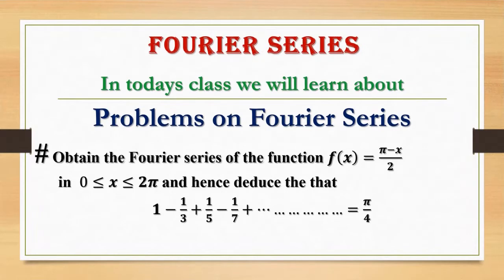In today's class, we will learn about problems on Fourier series. The problem is: obtain the Fourier series of the function f(x) = (π - x)/2 in the interval 0 ≤ x ≤ 2π. Hence, deduce that 1 - 1/3 + 1/5 - 1/7 + ... = π/4.